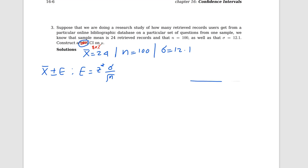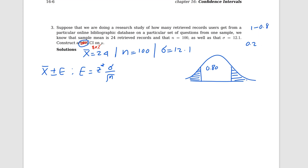We need to find z-star for the 80% level. The middle area should be 0.80. The two tails combined are 1 minus 0.8, which is 0.2. Because of symmetry, each tail is 0.2 divided by 2, which is 0.1. Then we need to find the z value corresponding to 0.1.